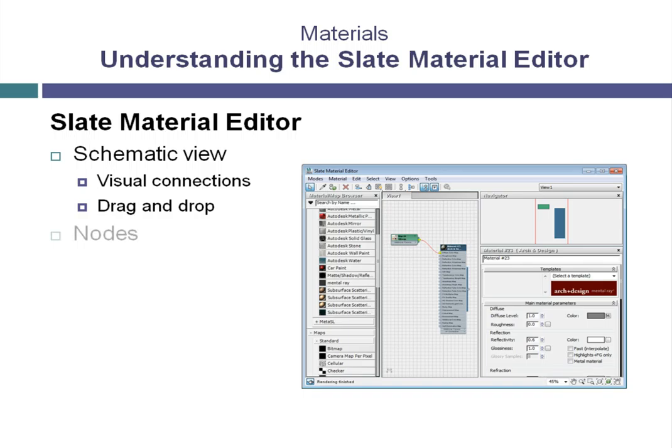The biggest difference between the Slate Material Editor and the Compact Material Editor is that materials can be built using a simple drag and drop technique, where you can quickly drag from the output of a map to the input of a material and you will see the result as a line connecting the two.